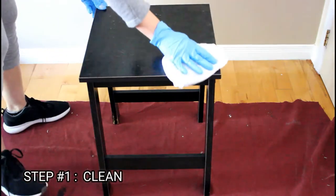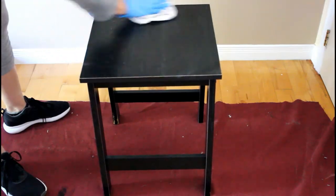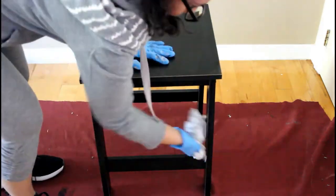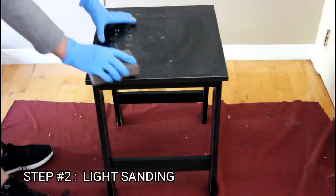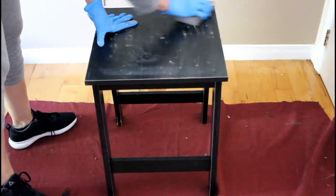First we'll start by cleaning the table with mild soap and water. Let's then do some light sanding with a 200 grit sanding sponge.